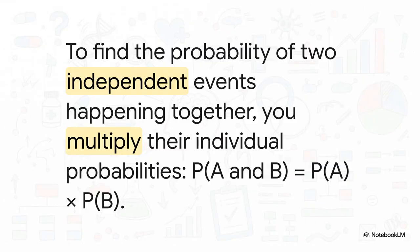So, when we're dealing with those independent events, the ones that don't affect each other, we have a really handy tool called the multiplication rule. If you want to know the probability of two separate things, A and B, both happening, you just multiply their individual probabilities together.